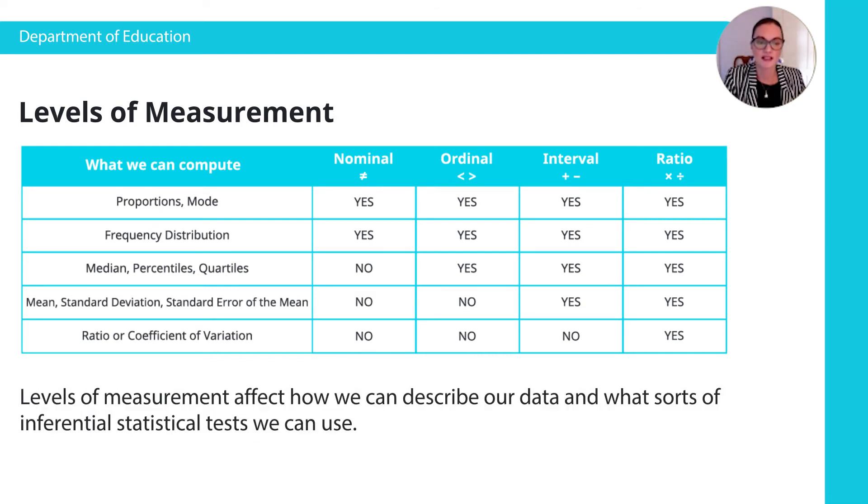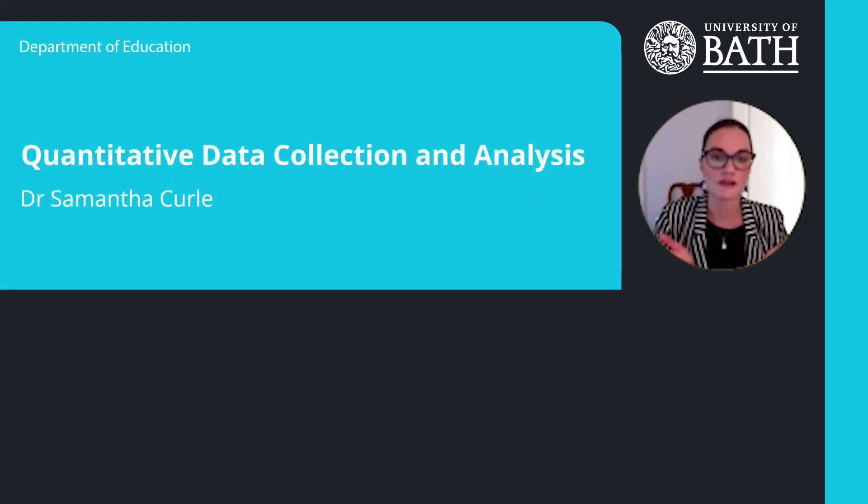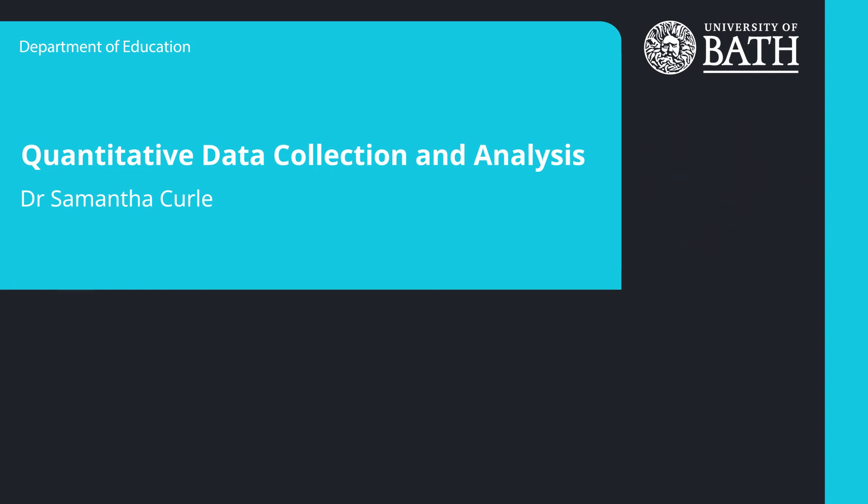So the levels of measurement affect how we can describe our data and what sorts of inferential statistical tests we can use. And that's really important. Once you've actually got your data, you'll see that. All right. I tried to just give you a very basic overview of quantitative data and what it all means. Thanks so much. And I shall see you next week.